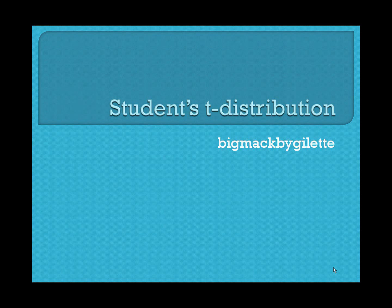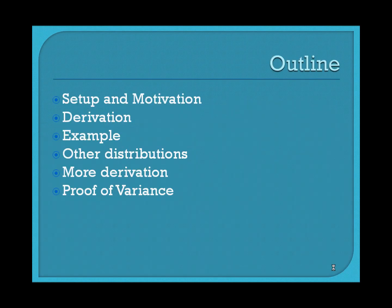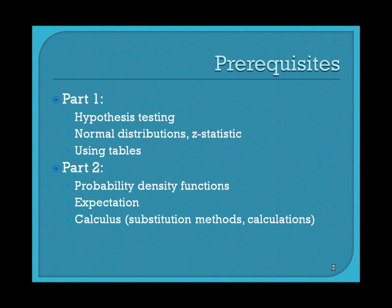Hi everyone, Big Mac here. Welcome back to video number two of our discussion of the student's t-distribution. In the last video we talked about some basic setup and motivation, a basic idea of where the t-distribution was coming from, and we did one example. In this episode we're going to talk about how it's related to other distributions, more derivations such as how to find the probability density function, and give a proof of its variance.